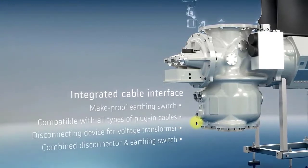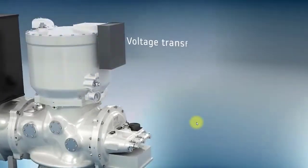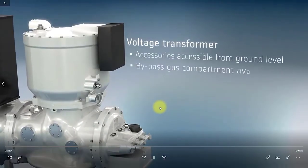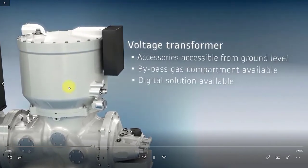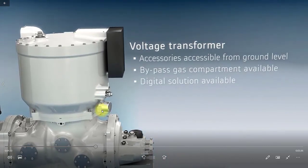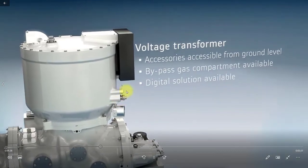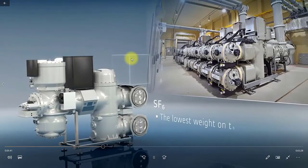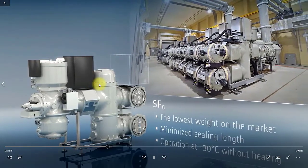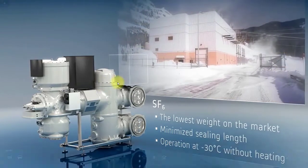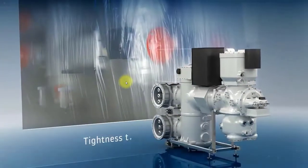This is a combined unit — the line earth switch, which is a high-speed earth switch. Here is the voltage transformer. This pressure gauge is really easily accessible. This is the gas filling point for SF6, and this is the density box. SF6 is used in this gas insulated switchgear and can operate at minus 30 degrees centigrade without heating — that is one of its key characteristics.